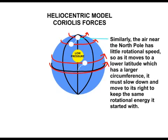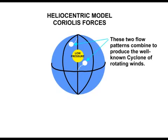Similarly, the air near the north pole has little rotational speed so as it moves to a lower latitude which has a larger circumference it must slow down and move to its right to keep the same rotational energy it started with. These two flow patterns combine to produce the well-known cyclone of rotating winds.